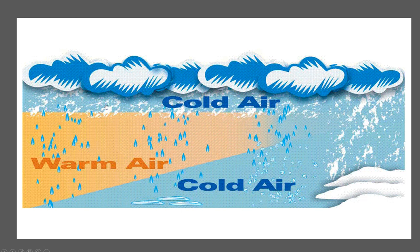Blizzards form through three factors: cold air at below freezing temperature, water vapor, and warm air. When a warm front and a cold front collide, the warm air, which is able to hold more moisture, has less density and rises and cools. As the warm air cools, it cannot hold as much moisture and precipitation is created. The precipitation is turned into snow by the below freezing temperature air below the warm front.